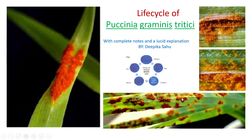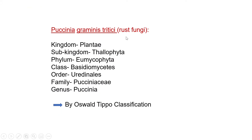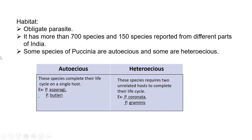Puccinia graminis tritici is otherwise known as the rust fungi. It belongs to the kingdom Plantae, sub-kingdom Thallophyta, phylum Eumycophyta, class Basidiomycetes, order Uredinales, family Pucciniaceae, genus Puccinia. This classification is given by Oswald Tipo. It is an obligate parasite, meaning it cannot complete its life cycle without exploiting the host. It has more than 700 species, with 150 species reported from India.